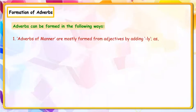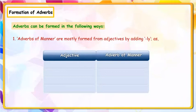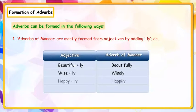Formation of adverbs. Adverbs can be formed in the following ways. Adverbs of manner are mostly formed from adjectives by adding '-ly'. Adjective → Adverb of manner: Beautiful + ly = beautifully; Wise + ly = wisely; Happy + ly = happily; Sad + ly = sadly.